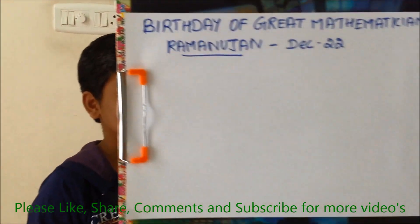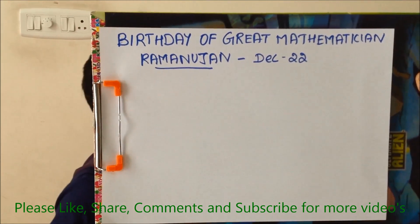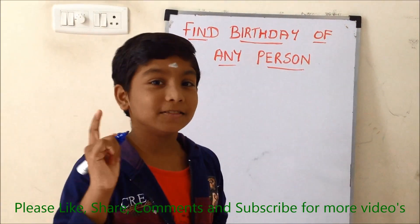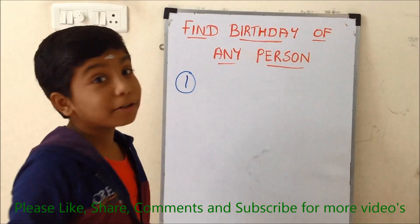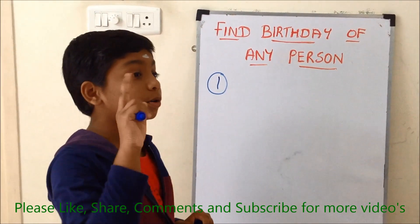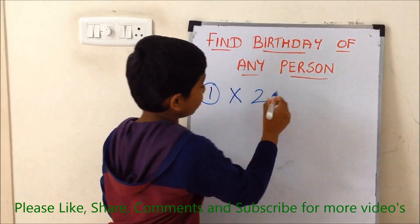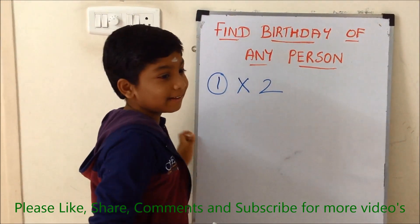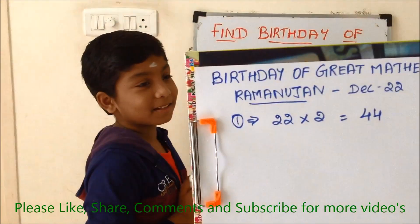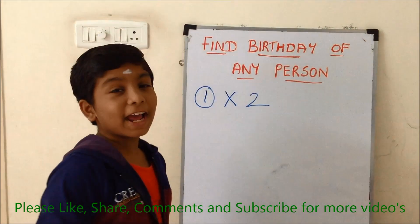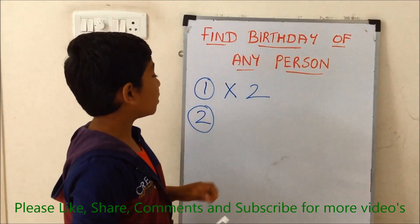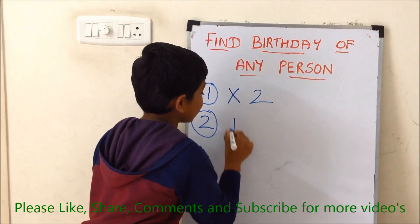Friends, please see — this is the birthday I have taken and I am showing this to you only, so you can check whether my boy is doing correctly or not. The first step is we need to multiply the day of the birthday by two. Then the second step is we need to add five to the total number which you got in the first step — plus five.